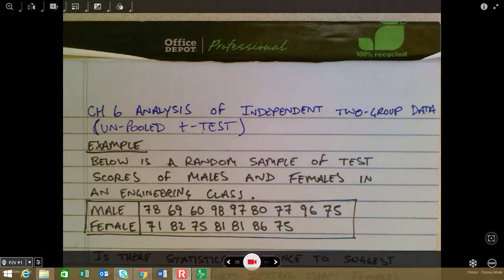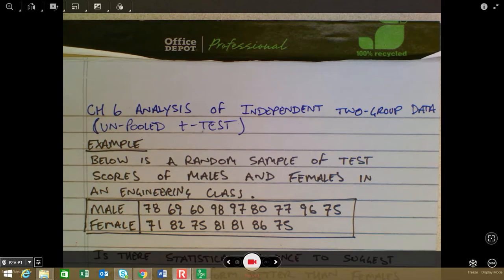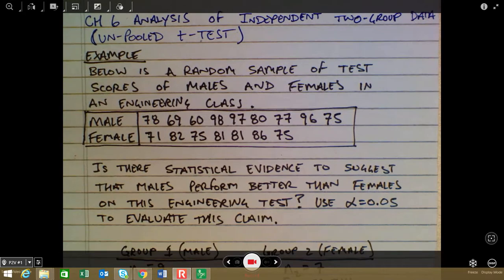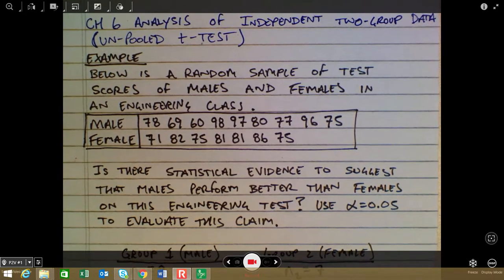We're going to take a look at Chapter 6 in this lesson. Chapter 6 deals with the analysis of independent two-group data, and specifically we're going to look at an example that uses the unpooled t-test. Below we have a random sample of test scores of males and females in an engineering class, and what we want to learn is whether there is statistical evidence to suggest that the males perform better than the females on this engineering test on average.